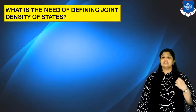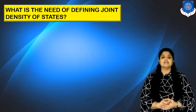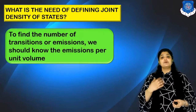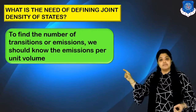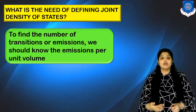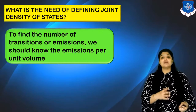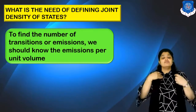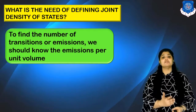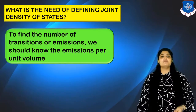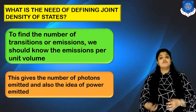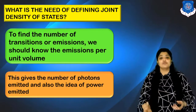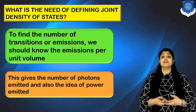Now let us discuss the need for defining joint or optical density of states. Joint density of states gives us the number of transitions or emissions per unit volume. While the regular density of states (DOS) tells us the number of charge carriers per unit volume, joint density of states tells us how many emissions or transitions can take place per unit volume. This gives us the number of photons emitted, and the number of transitions per unit volume also gives us an idea of the generated or emitted power.